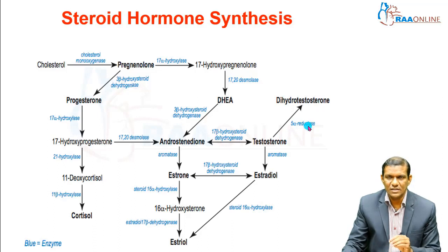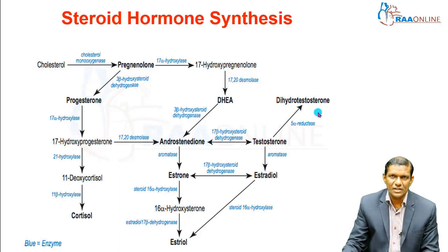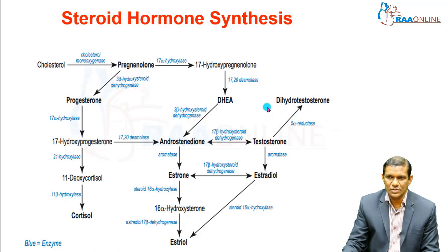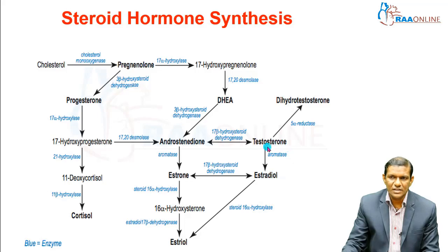There are certain drugs in this category — finasteride and dutasteride. These may appear in MCQs and short notes on 5α-reductase inhibitors. Testosterone also gets converted to estradiol, the estrogen component, by the enzyme aromatase.